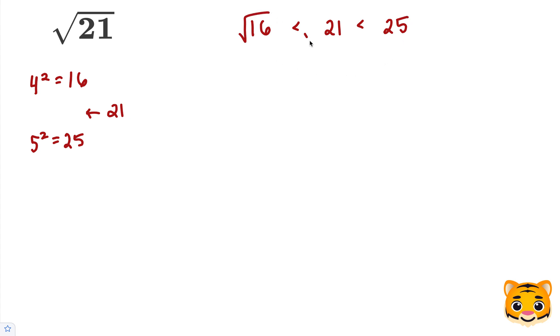Now we can take the square root of all the values in this inequality. The square root of 16 can then be rewritten as 4, and the square root of 25 can then be rewritten as 5.